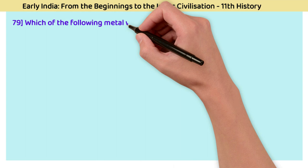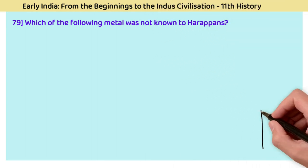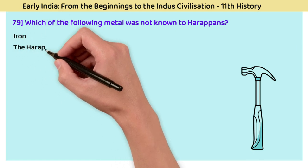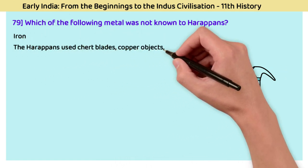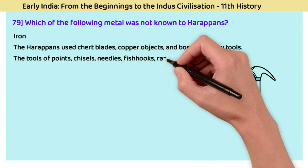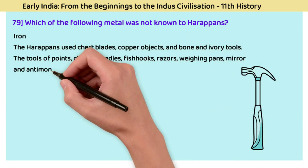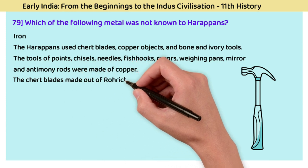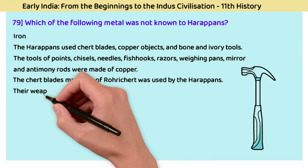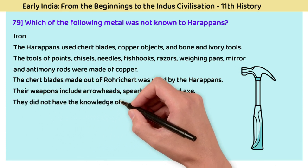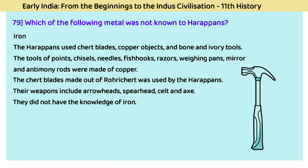Question 79: Which metal was not known to Harappans? The answer is iron. Harappans used chert blades, copper objects, and bone and ivory tools. Tools including points, chisels, needles, fish hooks, razors, weighing pans, mirrors, and antimony rods were made of copper. Chert blades made from Rohri chert were used by Harappans. Their weapons include arrowheads, spearheads, celts, and axes. They did not have knowledge of iron.